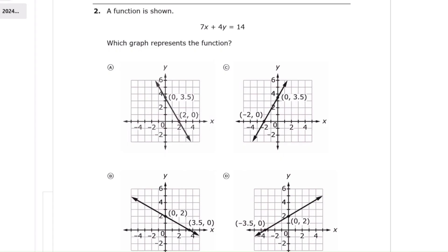Question 2. They give us the equation 7x plus 4y equals 14. We need to graph this equation. First, let's find the intercepts. For the x-intercept, when y equals 0, the equation becomes 7x plus 4 times 0 equals 14. That simplifies to 7x equals 14. Divide both sides by 7, and we get x equals 2.